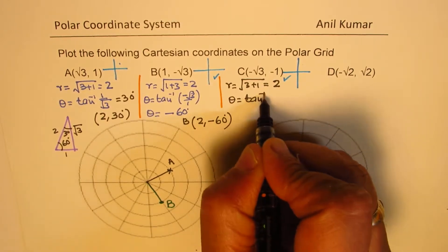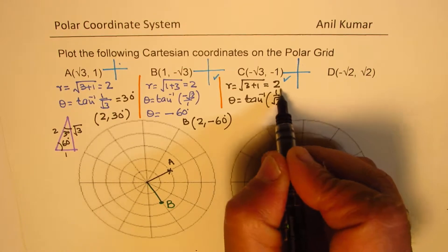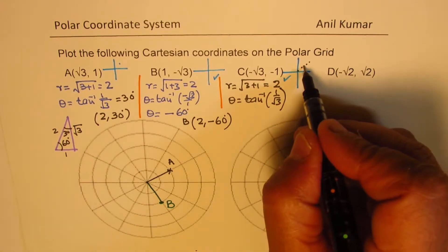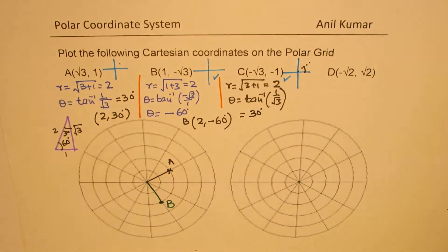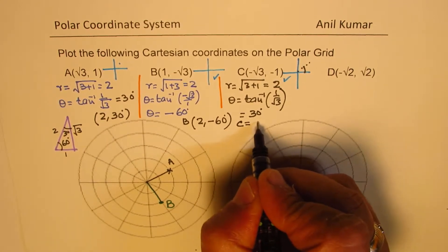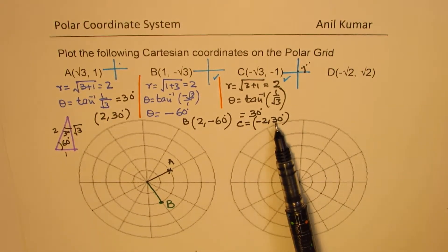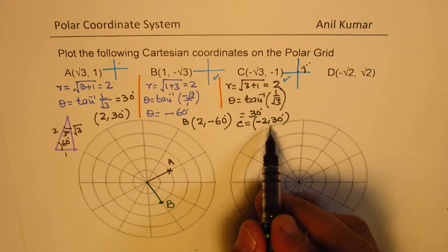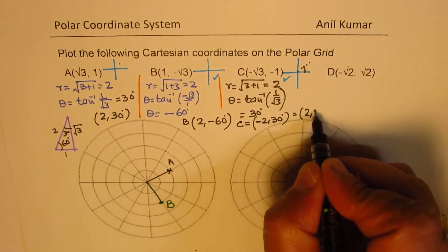Theta equals tan inverse of (-1 / -√3). Since both are negative, it simplifies to 1 over √3. Now 1 over √3 gives 30 degrees, but we are in quadrant 3. So we can write r as negative: point C equals (-2, 30°). Or we can add 180 degrees to 30 and keep r positive, giving us (2, 210°). Both are correct answers.